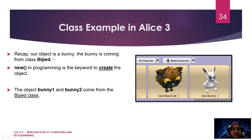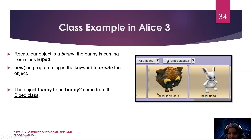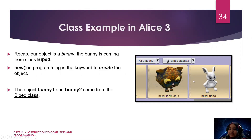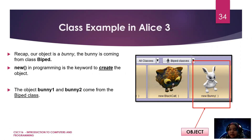To recap: our object is a bunny. The bunny comes from a class called Biped — biped meaning a two-legged animal. The keyword 'new' in programming is used to create an object. The object bunny1 and bunny2 come from the Biped class. So remember: an object is created from a class. Bunny is the object, and it originates from the Biped class.